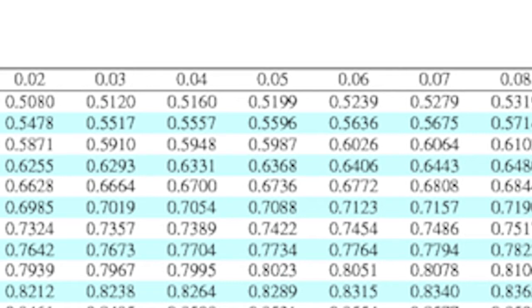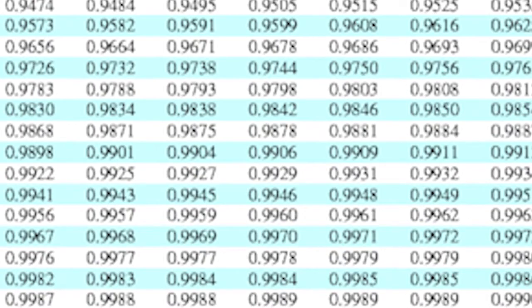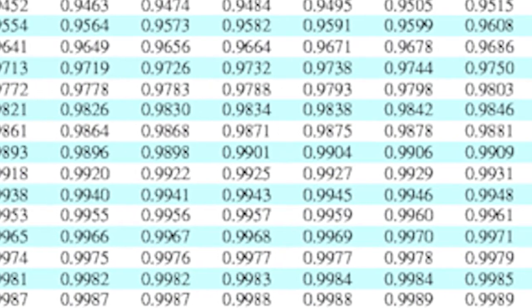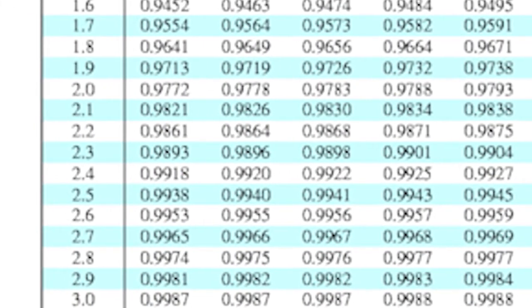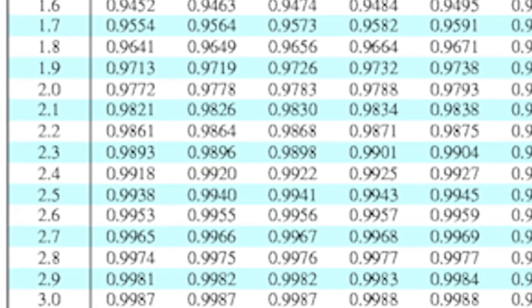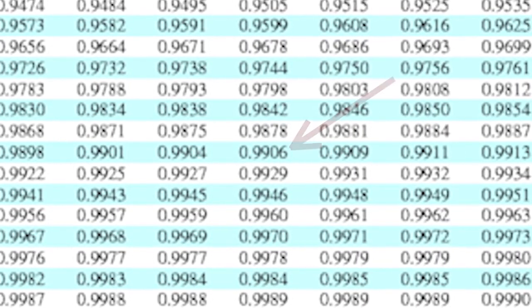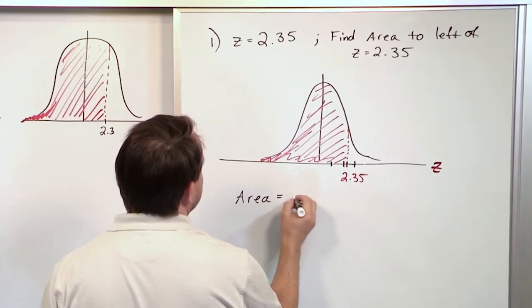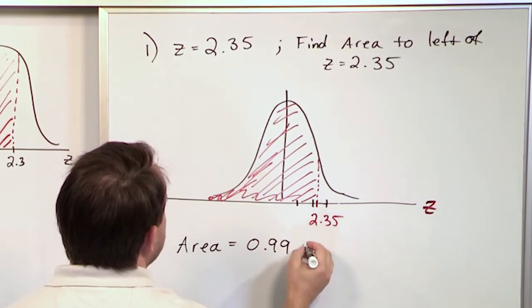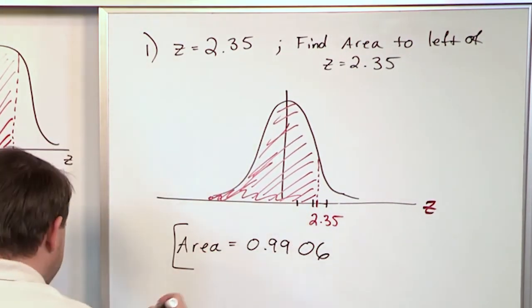So you have to read the initial column off to the left and also the top row up there to get the full number. So 2.3 locks down your row. You move to the right until you end up at the proper column with 0.05. So you're kind of adding them together. So you get 2.35. So whenever you look at the intersection of those two things, the answer you get is 0.9906. So the way you'd write that down is the area is equal to 0.9906. And that is the answer.